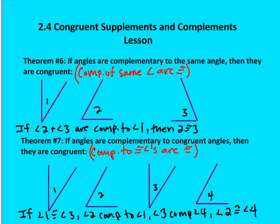Theorem six: if angles are complementary to the same angle, then they are congruent. This applies the same reasoning we had for supplementary angles, now applied to complementary angles. So if angle two is complementary to angle one, and angle three is complementary to angle one, then angle two is congruent to angle three.